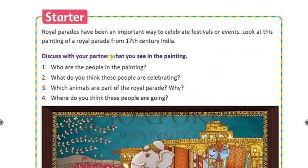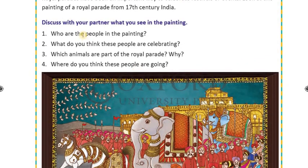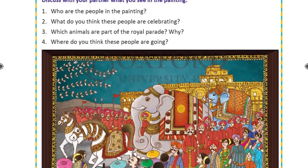Discuss with your partner what you see in the painting. Number 1: Who are the people in the painting? The people in the painting are royal soldiers with lances and flags, and common people who have come to watch the parade and be a part of the procession.